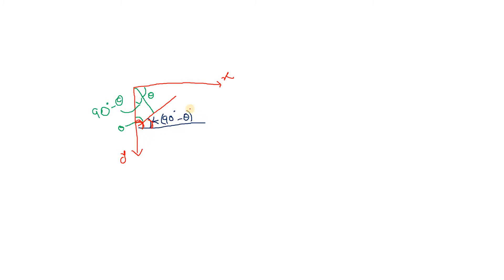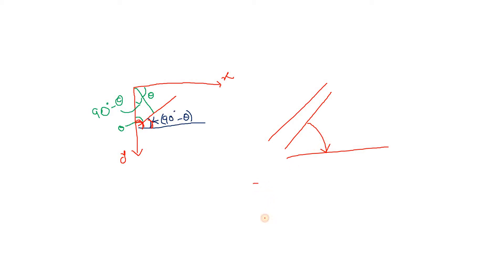So what we have derived: for text with this alignment, to convert it to a horizontal line, we have to rotate our original text by an angle of 90 degrees minus theta. And what is this direction? This is nothing but the clockwise direction. So for this case, the rotation is clockwise by 90 degrees minus theta.